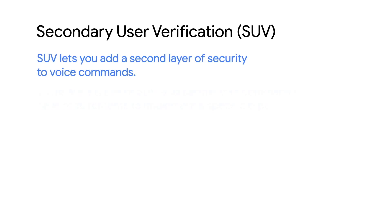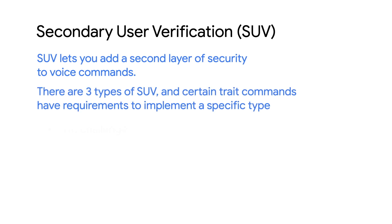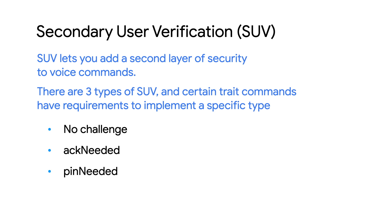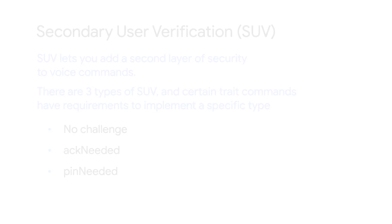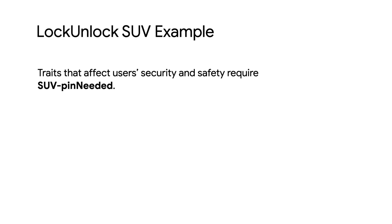Secondary user verification, SUV for short, adds an extra layer of security for devices. The three types and when to implement them are listed on the developer page per trait and command. An example requirement is PIN needed when a user is trying to unlock or open an entryway, which affects the overall security of the device.